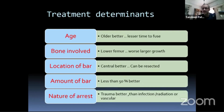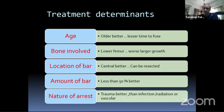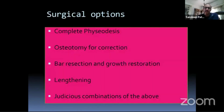Bars involving 40 percent or less of the physis have predictable results; 50 percent and higher give very unpredictable results. Finally, what was the nature of arrest? It is not only trauma that causes physeal bars. If the etiology is infection, radiation, or infarction, these will have very bad prognosis. It is better to have a traumatic physeal bar than an infective physeal bar.